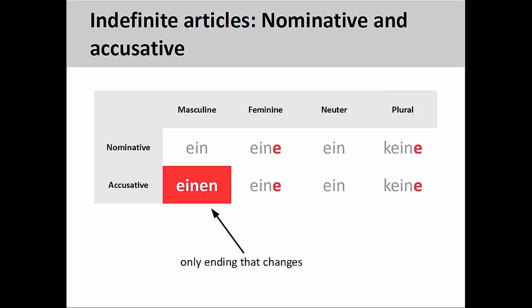And, as is to be expected, the masculine indefinite article is the only one that changes as it moves from the nominative to accusative, adding an -en ending.